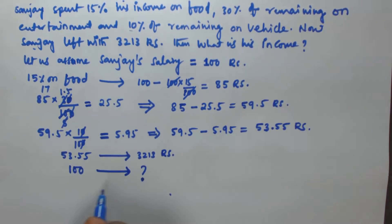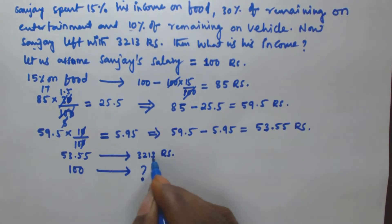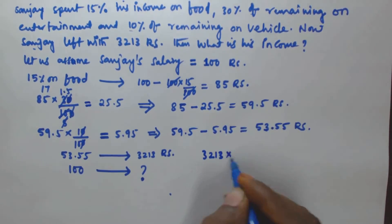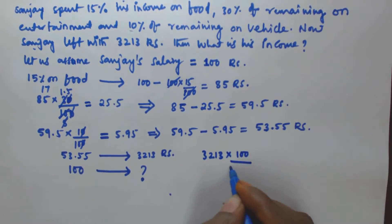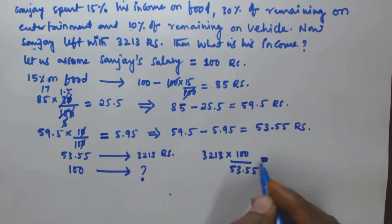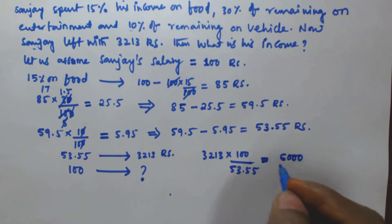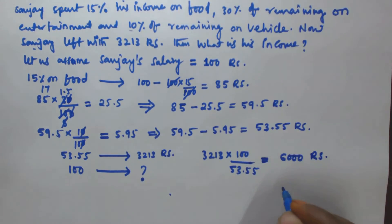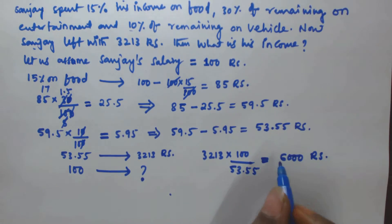So we multiply these two things and divide by this one. That gives us 3213 into 100 divided by 53.55. If you simplify this, you will get ₹6000. So the income of Sanjay is ₹6000.